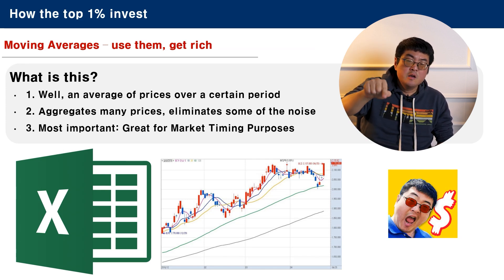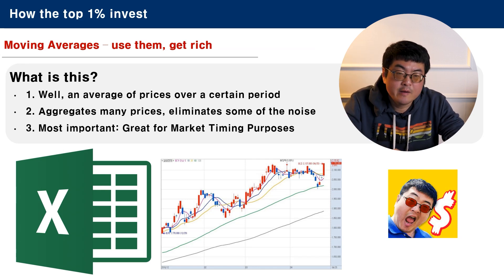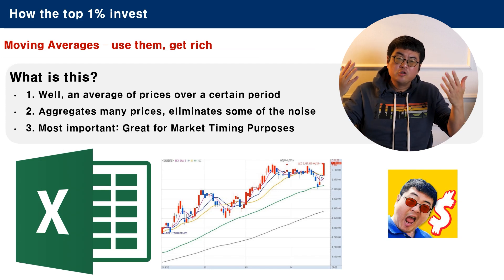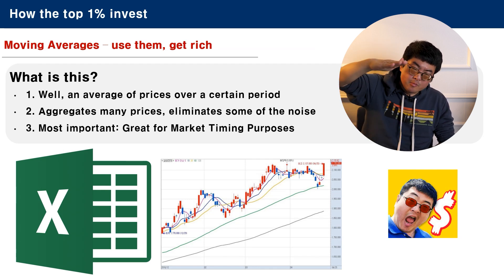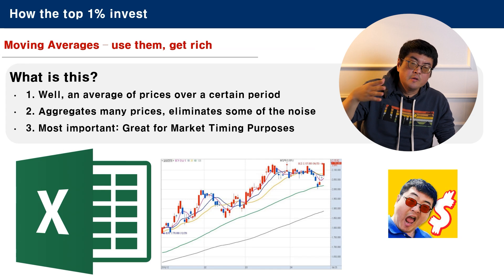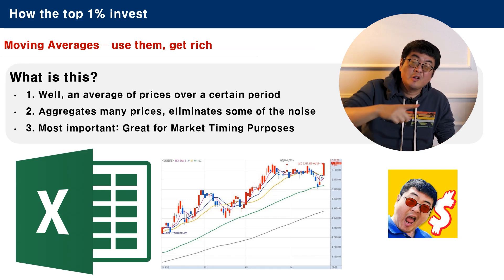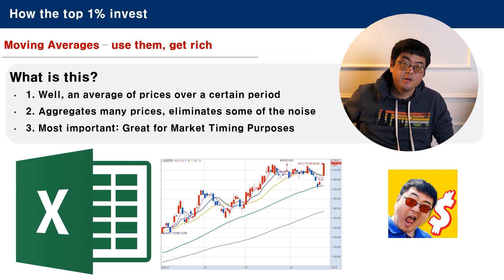If you have a moving average — for example here, you can see some samples of moving averages — you can see 5 different moving averages. Which ones are they? 5-day, 10-day, 20-day, 60-day, and 120-day moving averages. A moving average aggregates many prices and eliminates some of the noise. For example, the moving average on the lower side — this is a 120-day moving average. As you can see, this stock has moved up and down and created a lot of noise. However, the moving average just slopes upward.